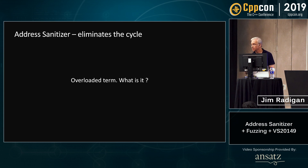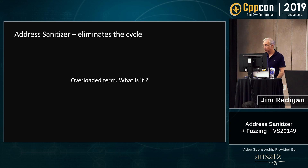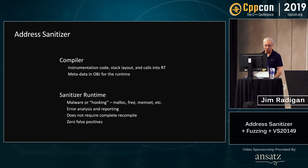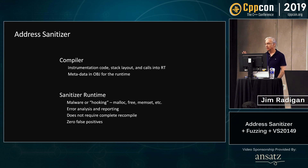I'm going to transition now and talk about the address sanitizer, which eliminates that cycle. When we say address sanitizer, it's really an overloaded term — it's a lot of stuff. At its core there are two major components: the compiler, which generates code in a special mode that targets interop with the ASAN runtime, and the runtime itself, which is designed to report errors when the compiler calls into it.